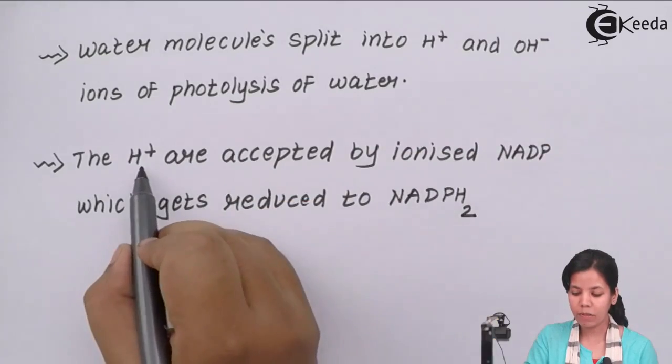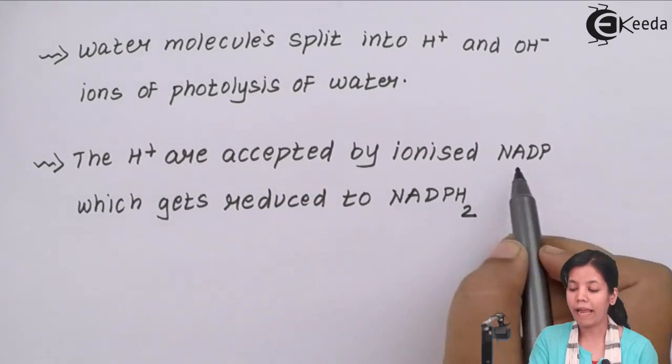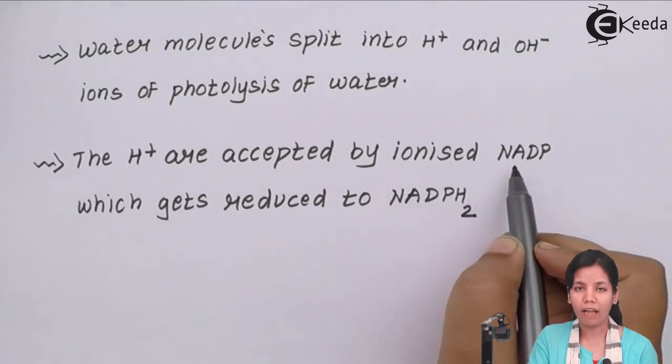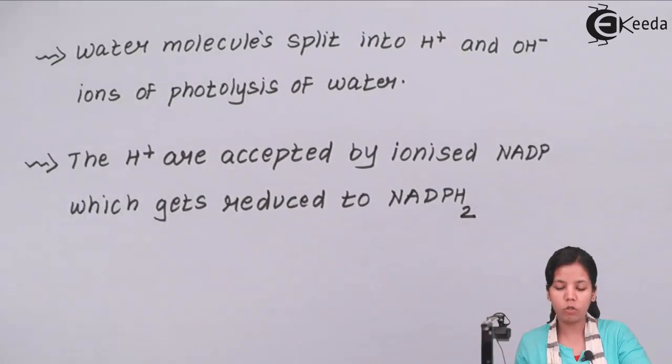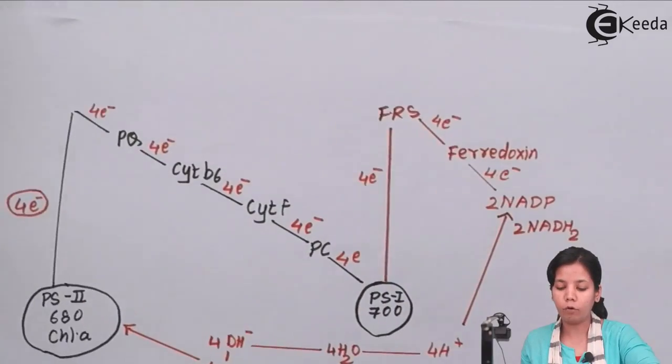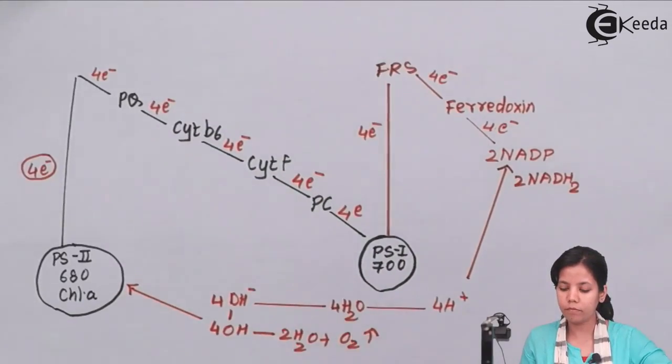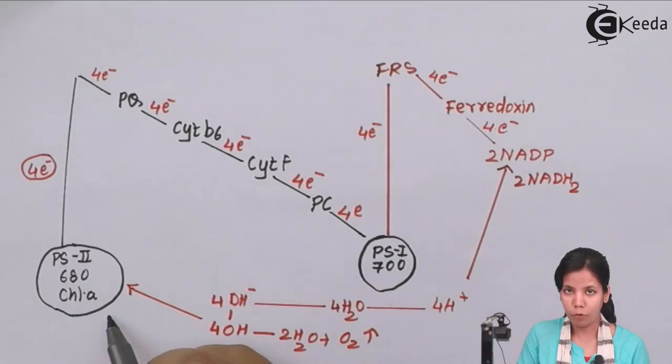Now the H plus ions are accepted by NADP to get ionized and this reduced NADP forms NADPH2 which helps in electron exception. So let us see how actually electrons are accepted during non-cyclic photophosphorylation.